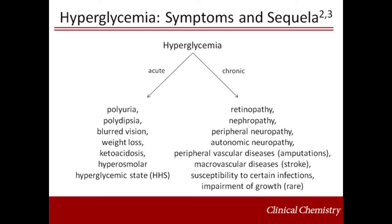Symptoms of hyperglycemia include polyuria, polydipsia, sometimes with polyphagia, blurred vision, and weight loss, which is characteristic of type 1 but not type 2 diabetes. Acute life-threatening consequences of uncontrolled diabetes are hyperglycemia with ketoacidosis or hyperosmolar hyperglycemic state.